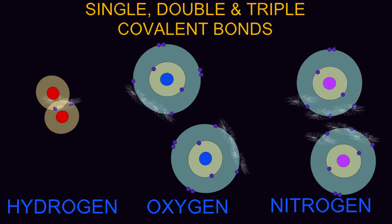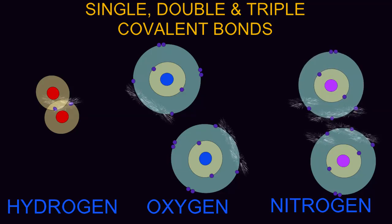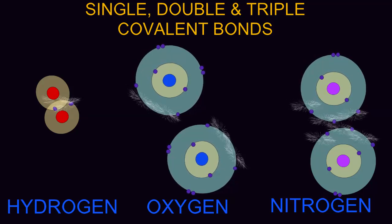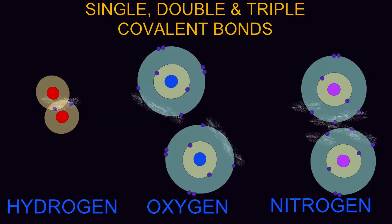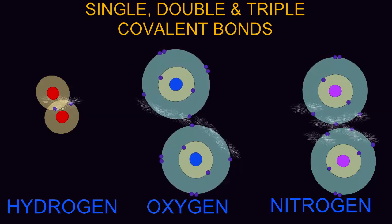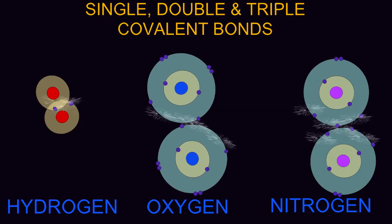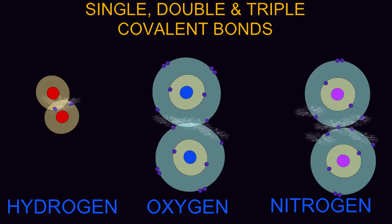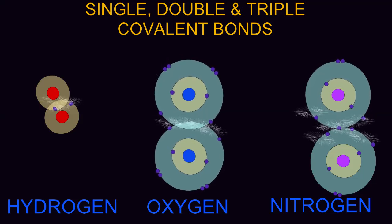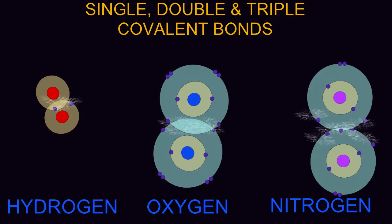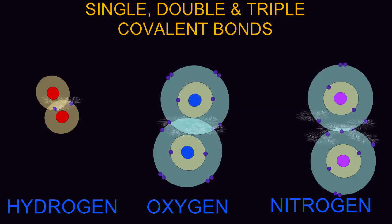Each of these oxygen atoms possesses six electrons in its outermost shell, but the outermost shell fits eight. So each oxygen atom requires two electrons to fill its outermost shell.